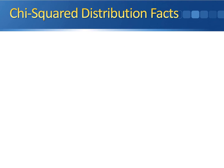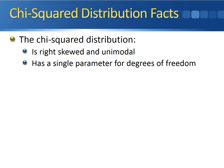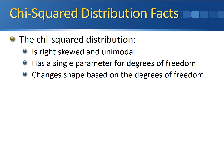Before we look at a picture of the chi-squared distribution, here are a few facts. The chi-squared distribution is right skewed and unimodal. It has a single parameter for the degrees of freedom, just like the t-distribution. Also like the t-distribution, the chi-squared distribution changes shape based on the degrees of freedom.